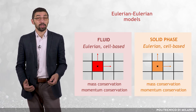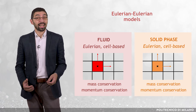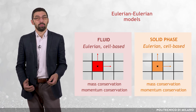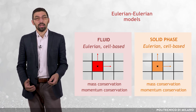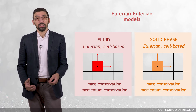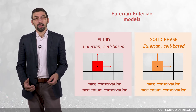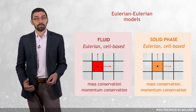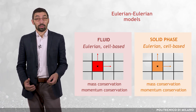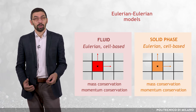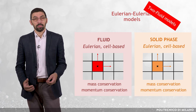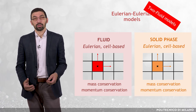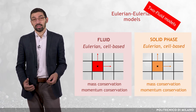As a consequence, one cannot see the individual particles, but only a fictitious fluid representing the local behavior of the ensemble of particles. For this reason, Eulerian-Eulerian models are also referred to as two-fluid models.